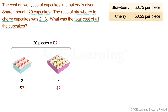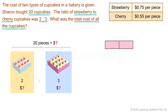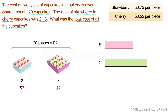The ratio of the cupcakes bought is given. Strawberry: two parts of the ratio. Cherry: three parts of the ratio. So we use two units to represent the quantity of the strawberry cupcakes — let's use S for short. For the cherry cupcakes, that will be three units — let's use C for short. The total number of cupcakes is 20. We'll use a curly bracket here to represent a sum, and indicate the sum, which is 20.